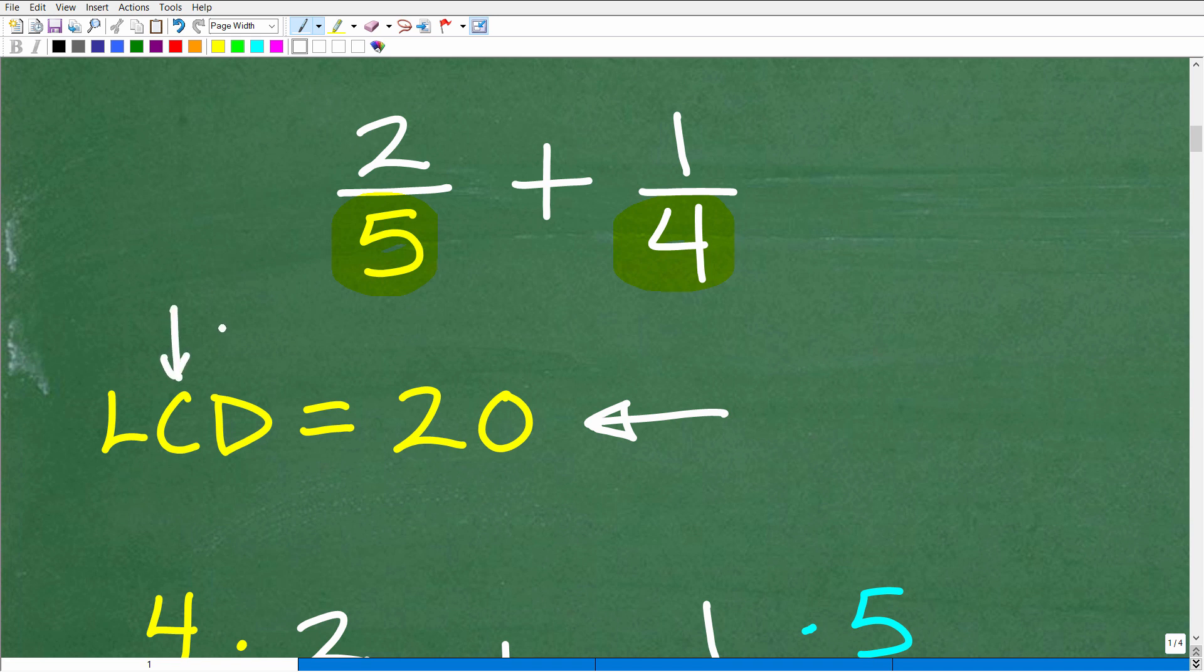So we need to find a common denominator. In other words, what is a number that both 5 and 4 have in common? Of course, these are the numbers in these respective denominators. So we have to find a common denominator. And 5 and 4 have a lot of numbers in common, but we want to find the lowest common denominator.